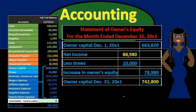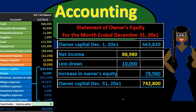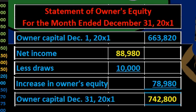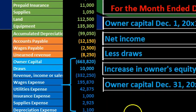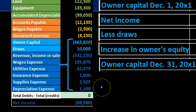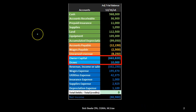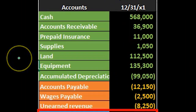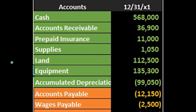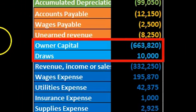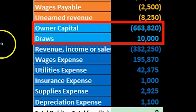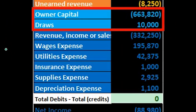Hello. In this presentation we will take a look at the statement of owner's equity and see how to construct the statement of owner's equity from the trial balance. When looking at the trial balance we can see the accounts will be in order with the assets, then the liabilities, then the equity, and then the revenue and expenses.